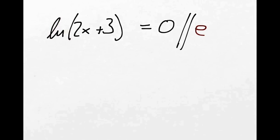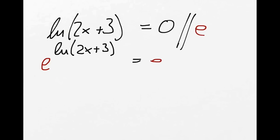Last but not least we have a little bit more complex calculation. We have ln(2x + 3) equals 0. We need to get rid of the ln, so we take both sides e: e to the power of ln(2x + 3) equals e to the power of 0. The ln and e cancel out, and all we have left is 2x plus 3 equals e^0. Anything to the power of 0 is 1.